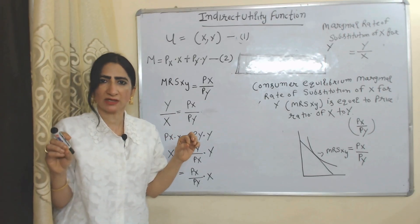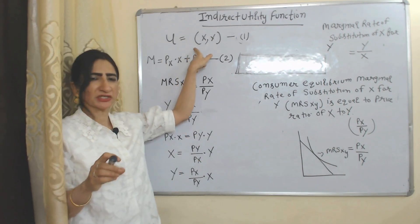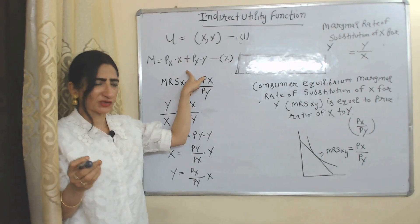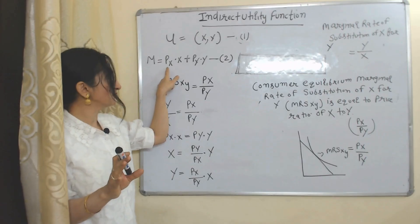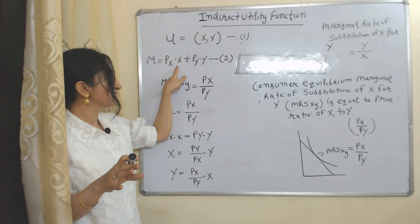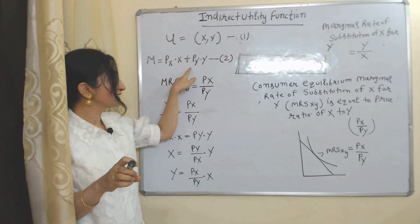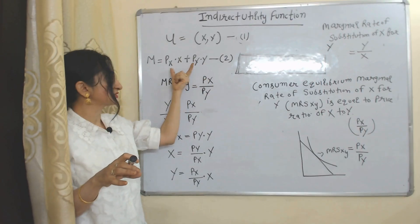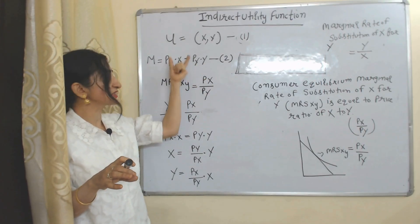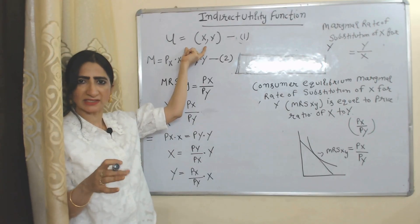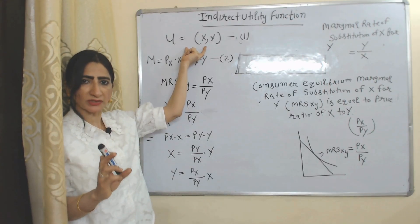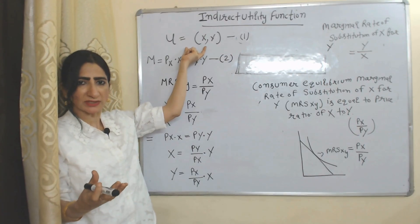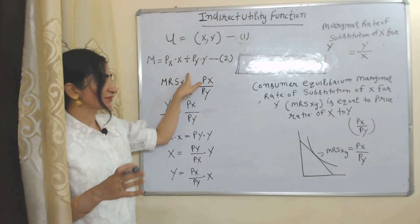This is the equation of direct utility and this is the equation of budget constraint. M is money income, PX is price of X, X is quantity of X, PY is price of Y, Y is quantity of Y. This is the budget constraint equation and this is the direct utility equation. To derive the indirect utility function, we start with the direct utility function and the budget constraint.